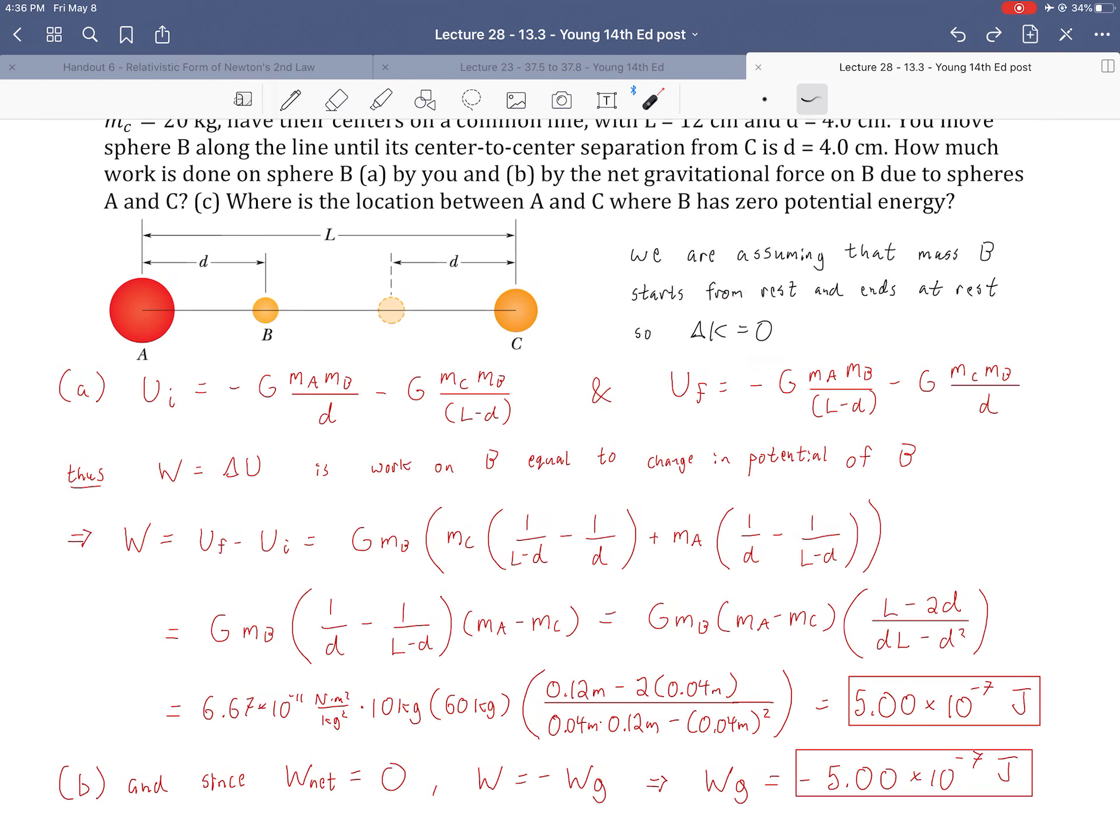And then the work done by gravity just has to equal the negative. Why? Well because delta K is zero, and remember work net equals delta K, so that means the only two works in the system are the work done by the external force and the work done by gravity. Those are the two works in the entire system, but because there's only two forces in the system, there has to be two forces because otherwise there'd be a change in kinetic energy. And there it is. There's the work done by gravity, which is negative 5 times 10^-7 joules.